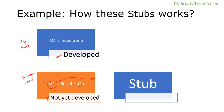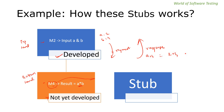We pass a request from m2 to the stub (in place of m4) and get a response. If we pass a=2 and b=4, we must get a result of a×b = 2×4 = 8. If we are getting the response as 8, then we can say that m2 is working as expected.